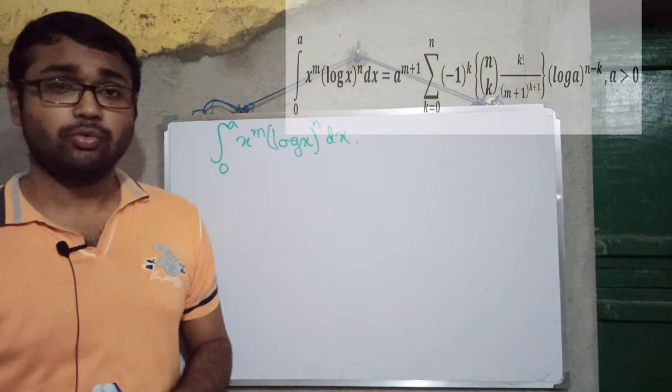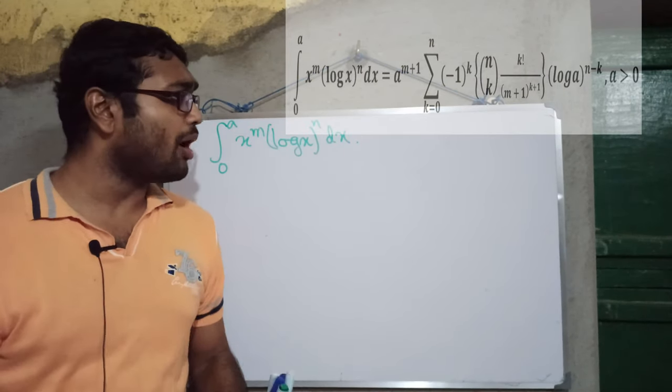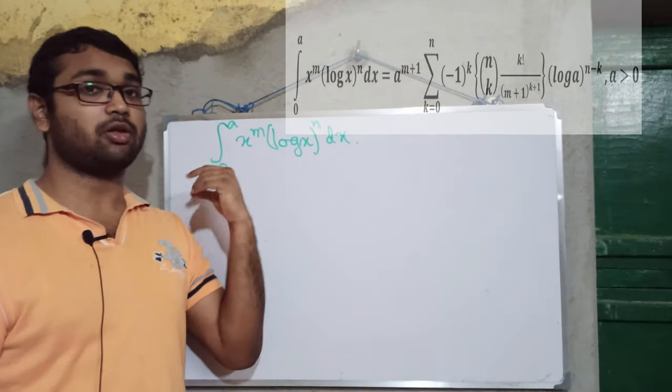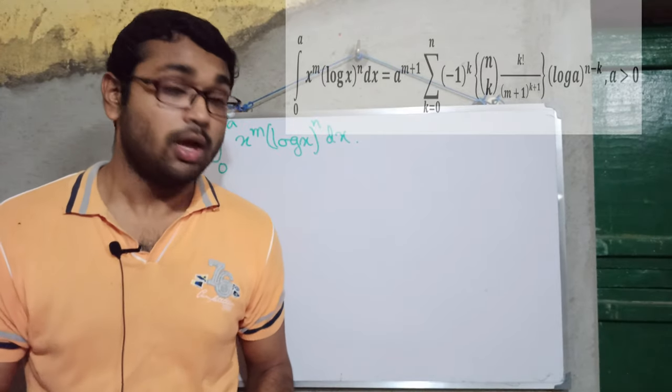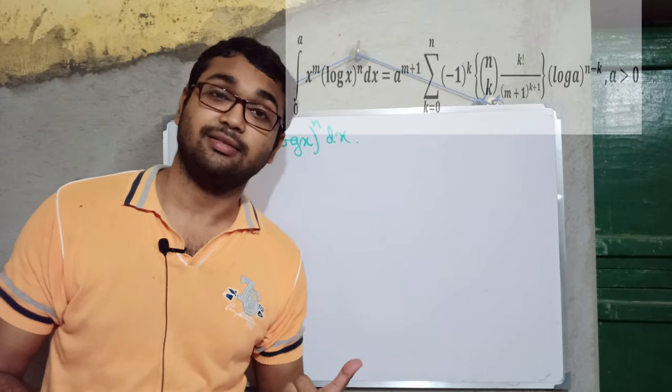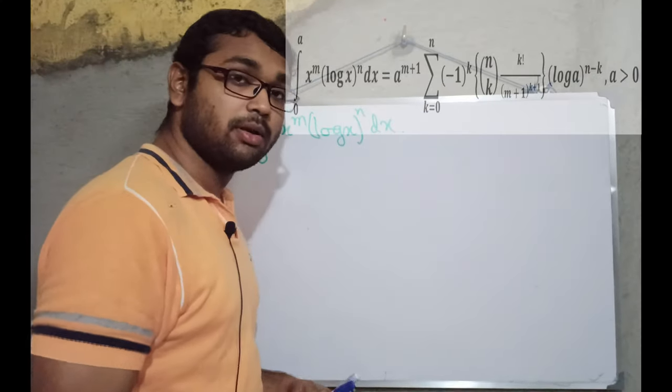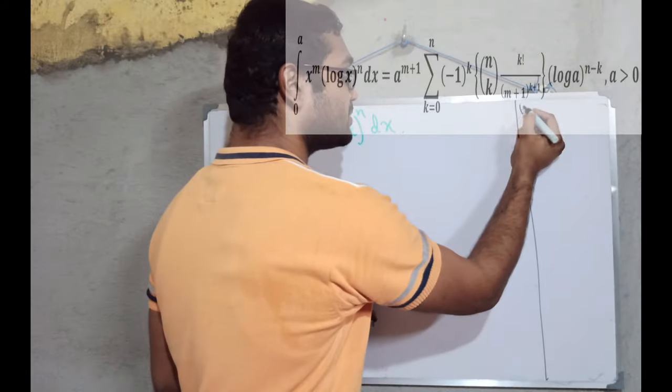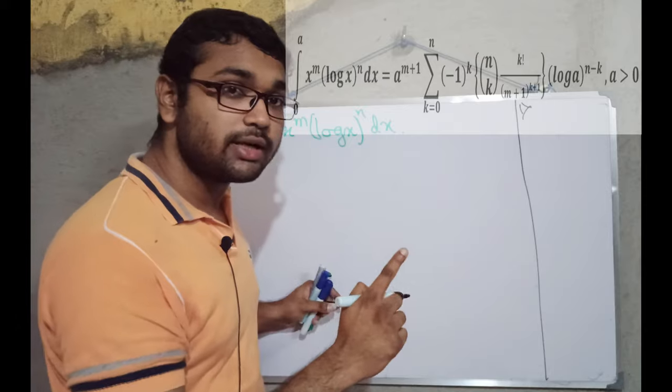Like the previous one, we can use substitution here also. But I prefer one more beautiful thing. First, let's change this interval of integration into something else, something we are familiar with, something we encountered in the last problem. Yes, from 0 to 1. But how to do that? Like the previous problem, I am doing all substitutions on the right side. Substitution number 1, where we have to convert this a into 1. How to do that?